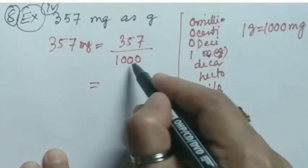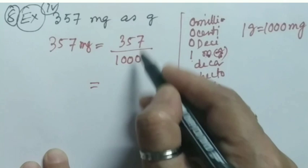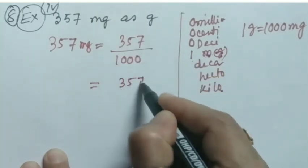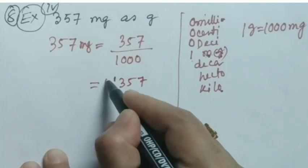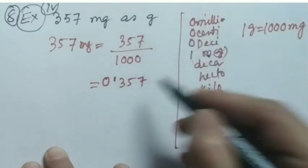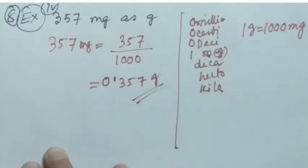Therefore 357 milligrams equals how much? 357 divided by 1000. Now we will put our decimal point - as in the denominator three zeros are there, we will put before three digits the decimal point. We will give one extra zero here. This equals 0.357 grams.